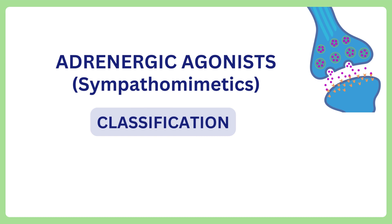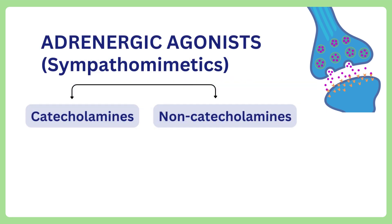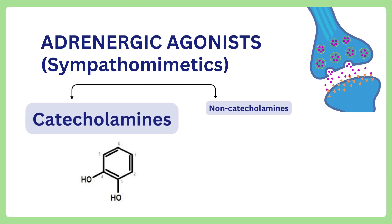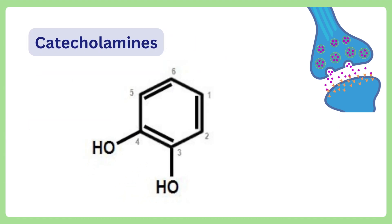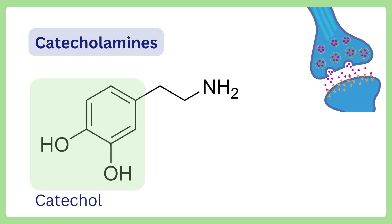Adrenergic agonists are classified into two categories: catecholamines and non-catecholamines, on the basis of the presence or absence of a catechol ring. The catechol ring is a benzene ring with two hydroxyl groups at its third and fourth position. The catechol moiety is an important structural feature to obtain maximal agonistic activity at adrenergic receptors.